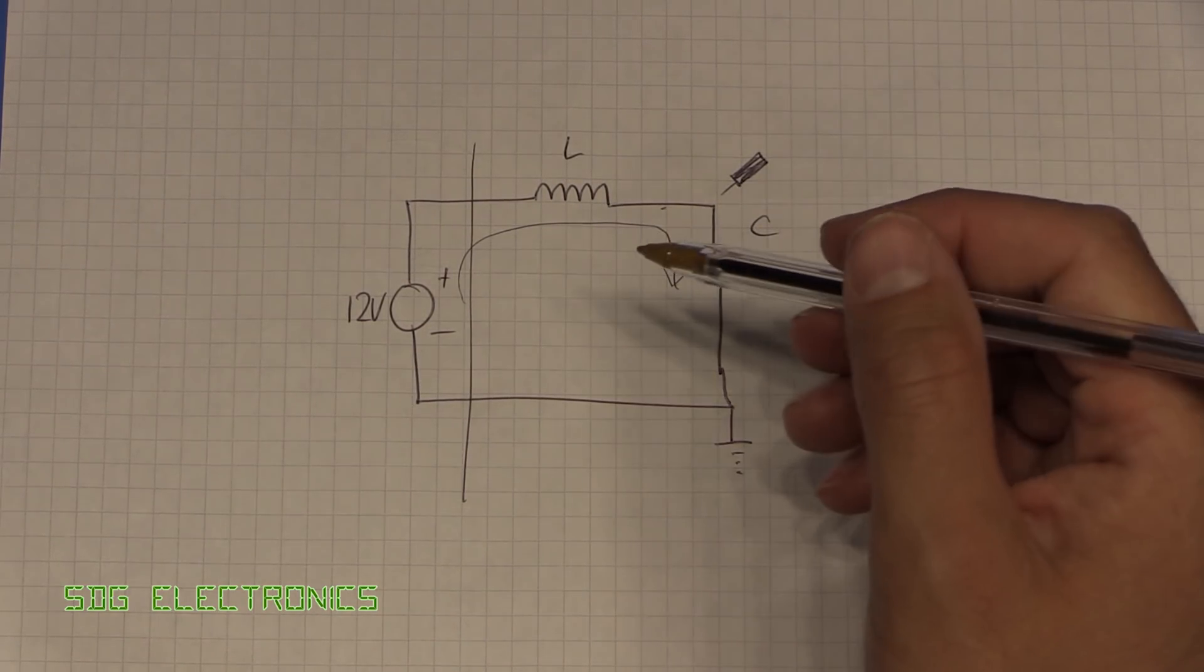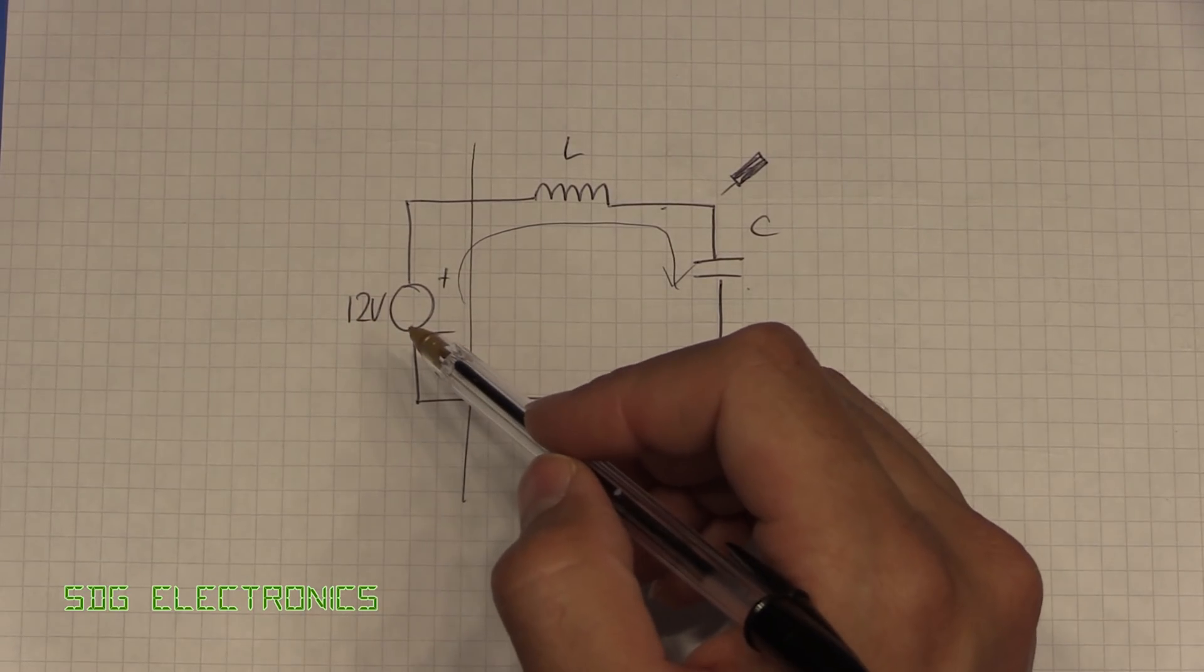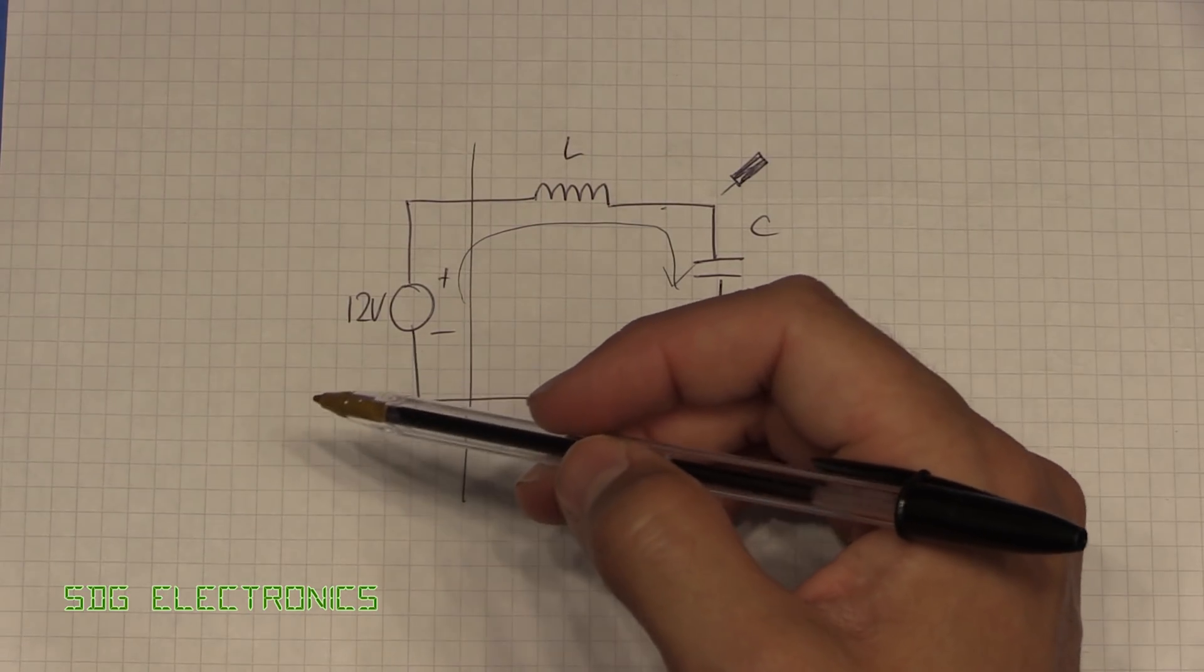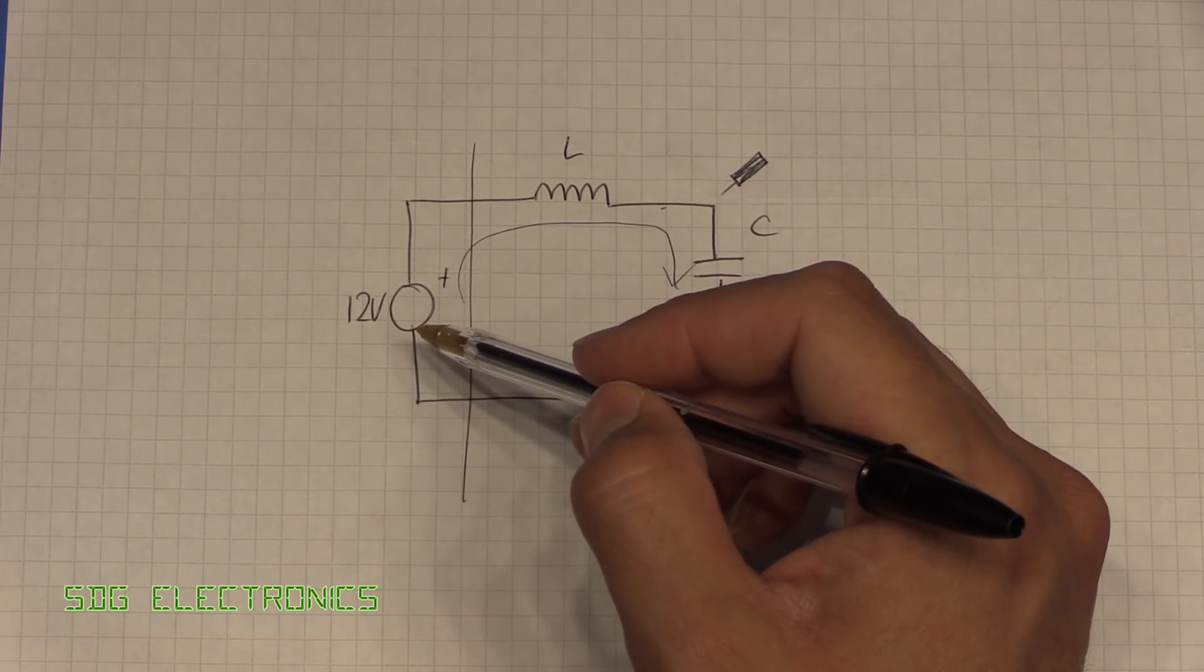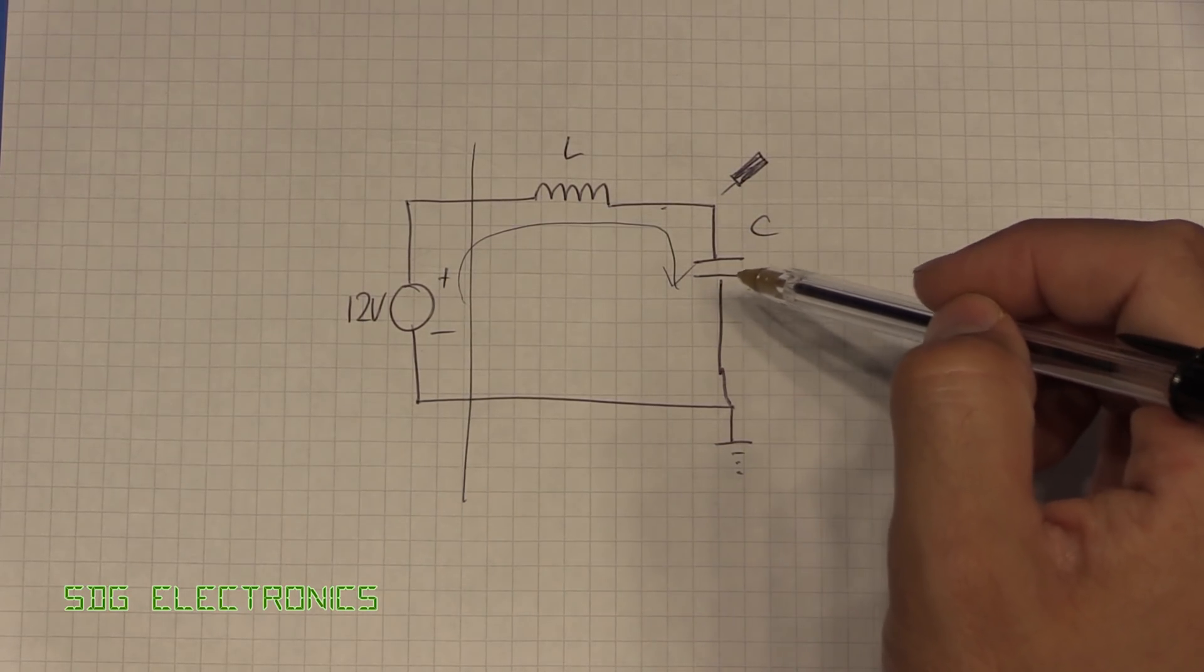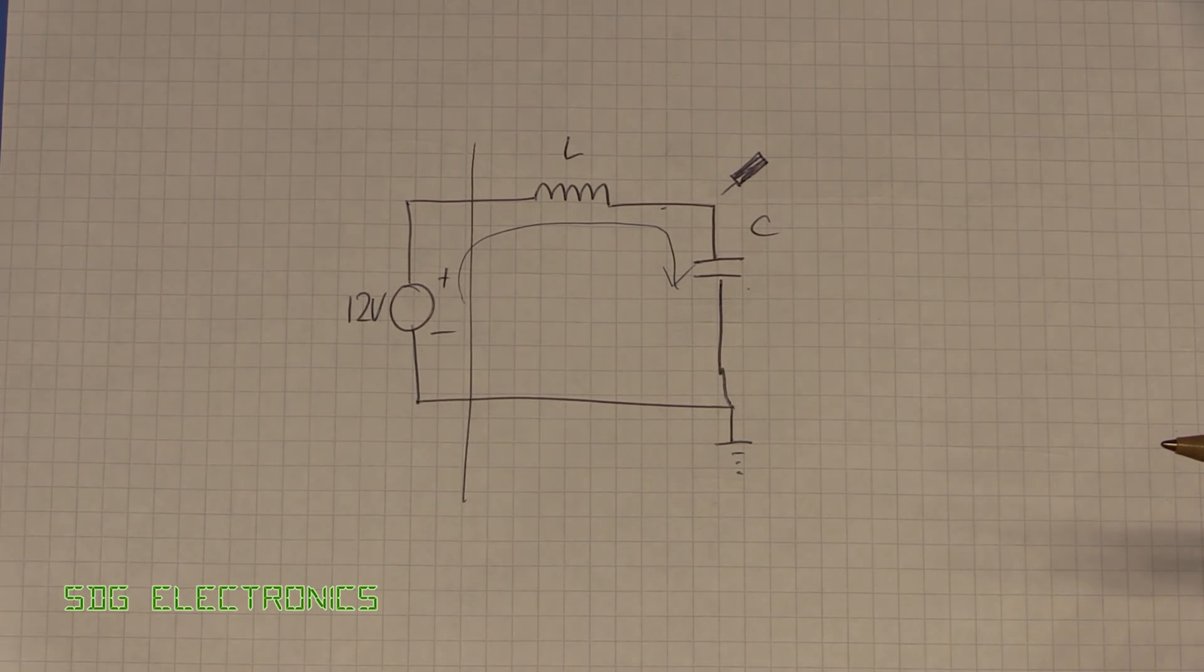In the situation where your power supply is permanently connected and you turn on the mains instead, you won't see this because the voltage on the output of your power supply will slowly increase and you won't see such a high current being drawn by your capacitors.